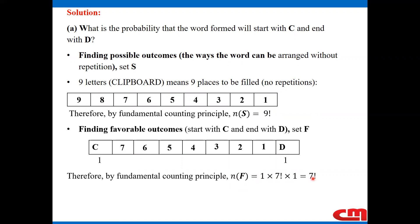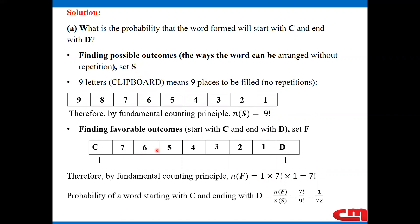So my favorable outcome is seven factorial. I have the possible outcome, which is nine factorial, and the favorable outcome, which is seven factorial. The probability of a word starting with C and ending with D equals the number of favorable outcomes over the number of possible outcomes, which is seven factorial over nine factorial. This reduces to one over 72. This is how one has to approach this problem — you need to use the idea of arrangement before answering the probability question.